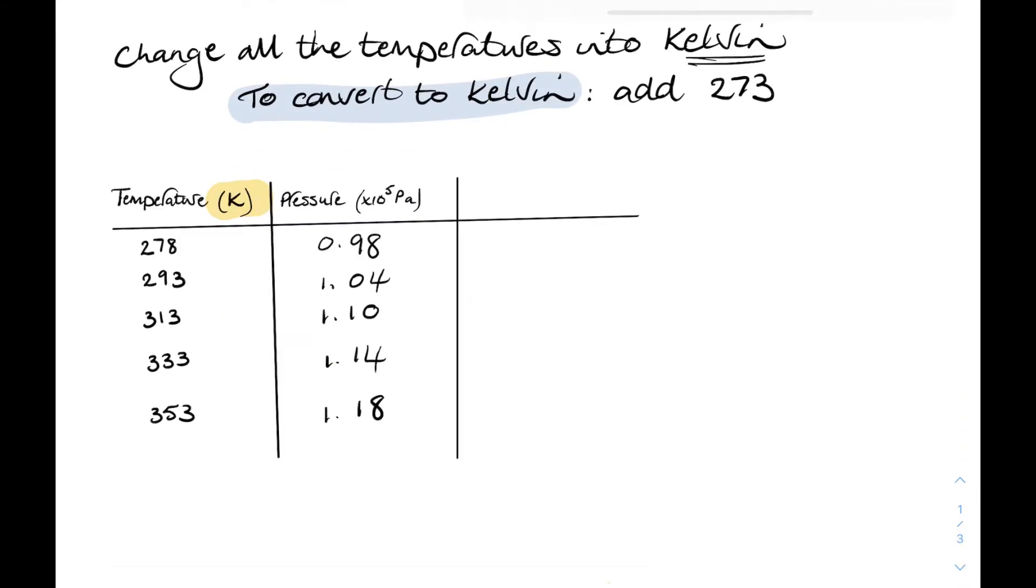So there's all our temperatures that have been converted into Kelvin. They've all had 273 added to them. And there's our pressure measurements from the previous table.